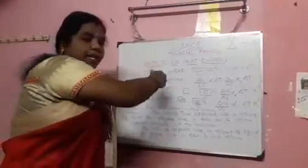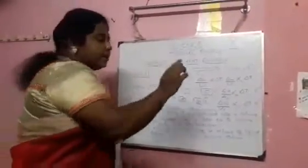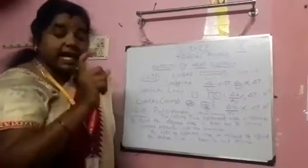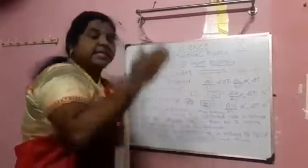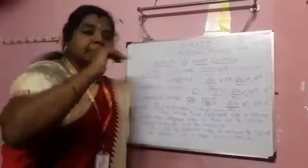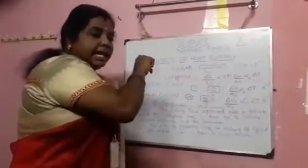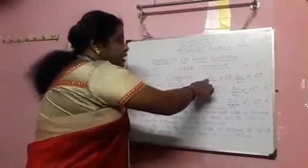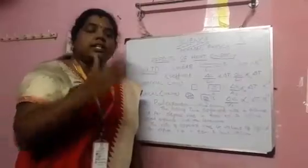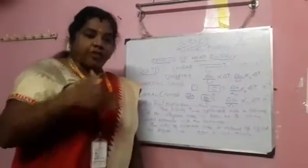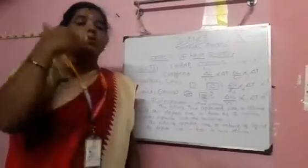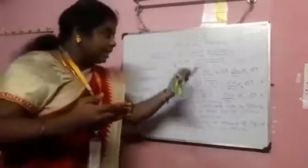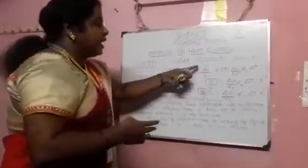First, we see linear expansion. Linear is nothing else — it indicates lengthwise. Linear means length. Consider a solid substance whose length has been measured and noted — that will be called L₀, the initial length. After you increase the temperature, automatically its length will be increased. That increase is called delta L. Delta indicates the difference — the difference between the initial level and the final level.